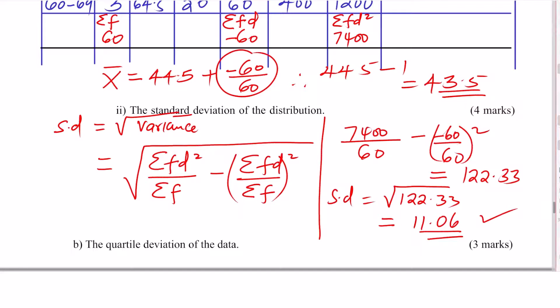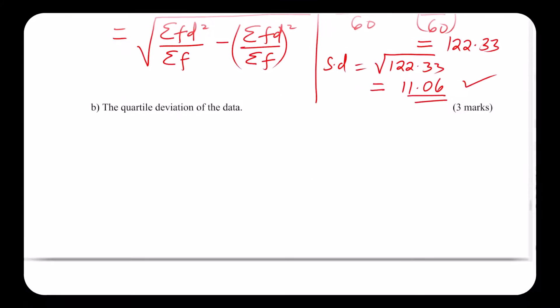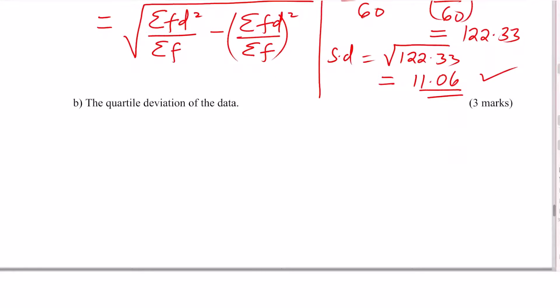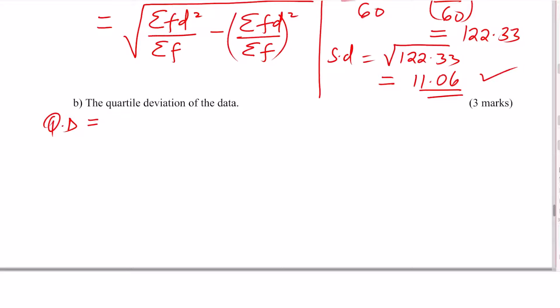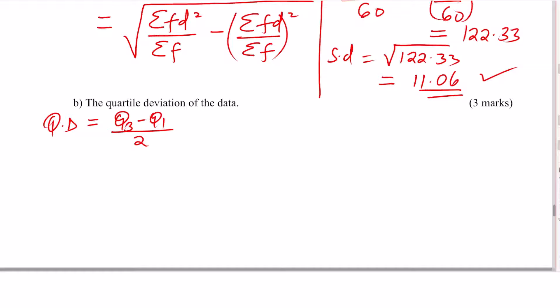So that is the standard deviation. Part B: the quartile deviation of the data. The quartile deviation QD is given by Q3 minus Q1, divided by two. Quartile deviation is also referred to as semi-interquartile range.